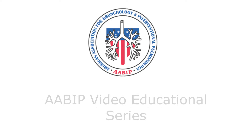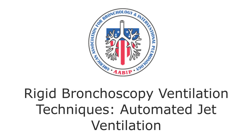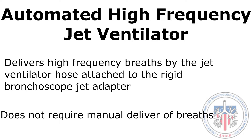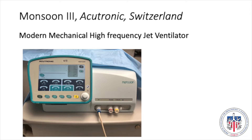AABIP Video Educational Series: Rigid Bronchoscopy Ventilation Techniques — Automated Jet Ventilation. Automated high-frequency jet ventilation delivers breaths to the rigid scope through the jet ventilator hose that is attached to the rigid jet adapter. It does not require the manual delivering of breaths. This is an example of an automated jet ventilator, the Monsoon 3.